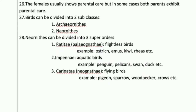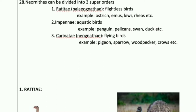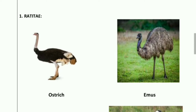Ratitae, also called Palaeognathae, are flightless birds. Examples include ostrich, emu, kiwi, and rhea. Remember the keyword: Ratitae means flightless birds. Impennae are aquatic birds — examples include penguin, pelican, swan, and duck. Carinate, also called Neognathae, are flying birds — examples include pigeon, sparrow, woodpecker, and crow.